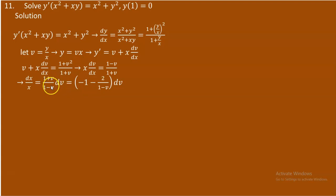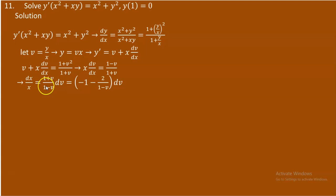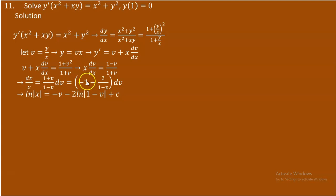Dividing (1 + v) by (1 − v) using long division: the quotient is −1 with remainder −2, giving −1 + (−2)/(1 − v). Applying direct integration: the left side gives ln|x|, and integrating −1 − 2/(1−v) gives −v + 2 ln|1 − v|, plus a constant.